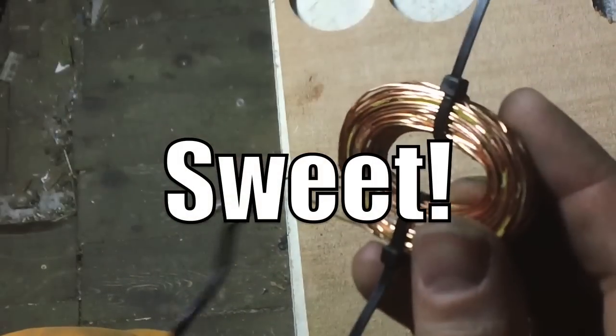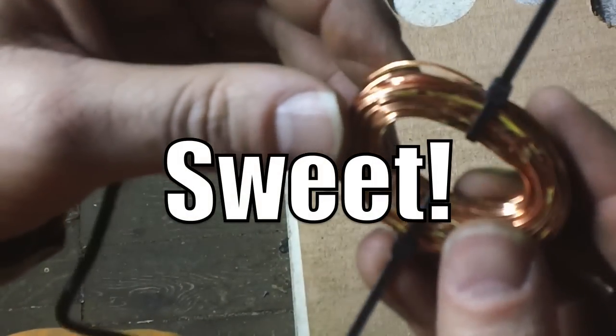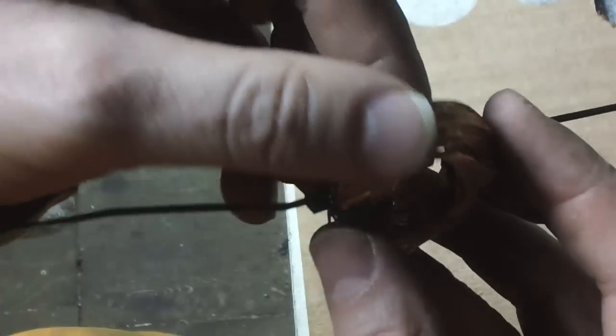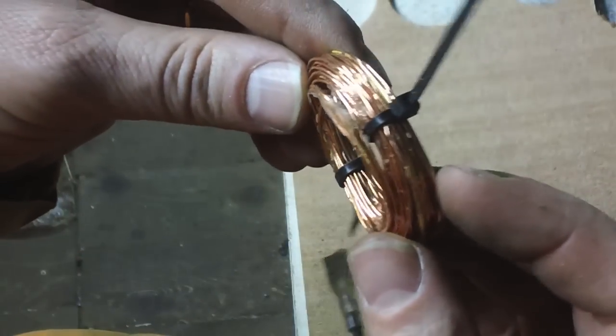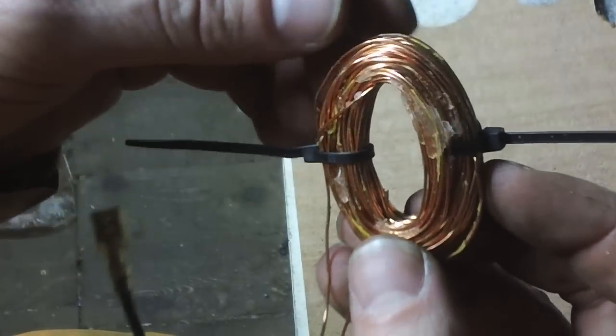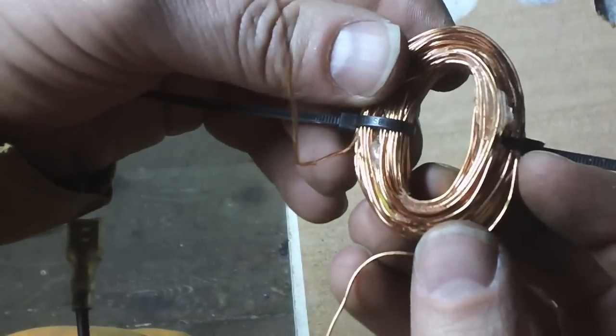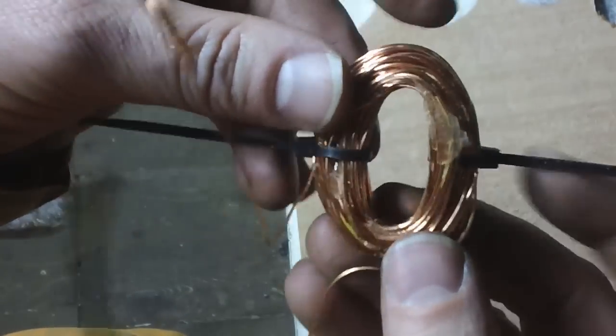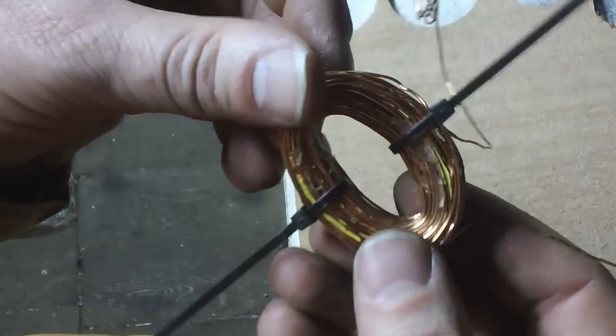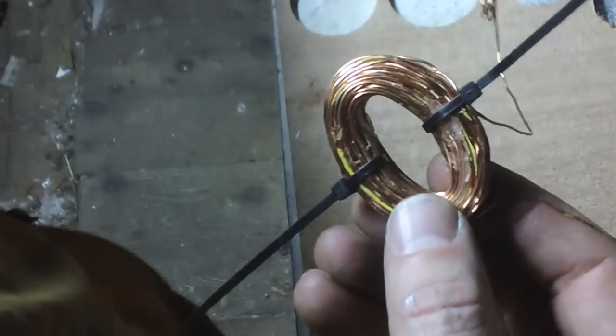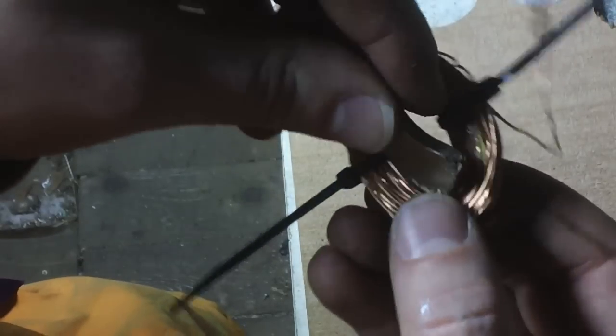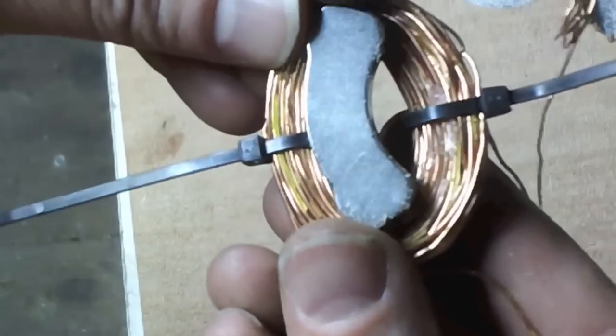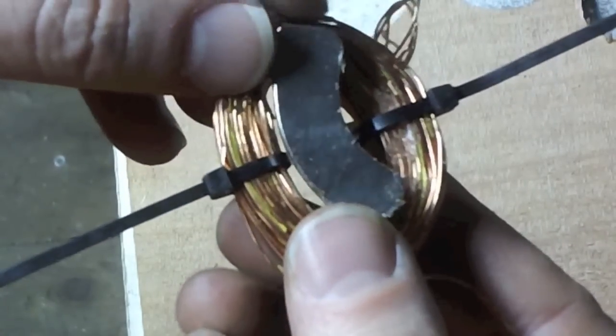There we go, there's the finished product. Got 86 turns. I'm happy with this. I think this is the winner that we're going to be going with. So there's the magnet, the size ratio and the spacing and everything.